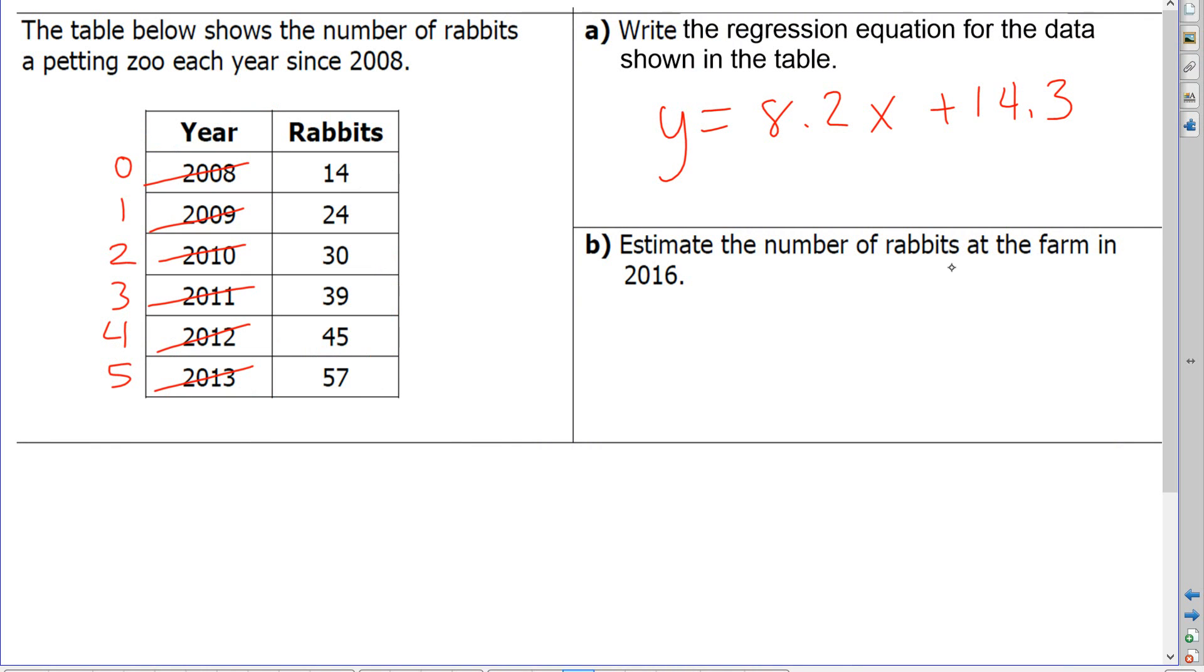Now if I want to estimate the number of rabbits at the farm in 2016, then 2016 would be eight years from the beginning. So I'm actually going to enter an eight into my equation, not the number 2016. I'm going to enter the number eight here, because it is eight years since the beginning, which was 2008.